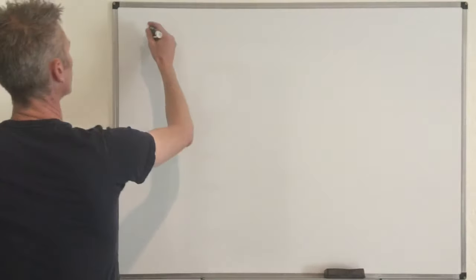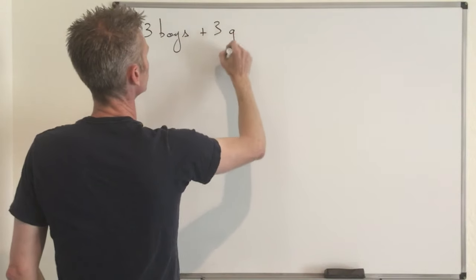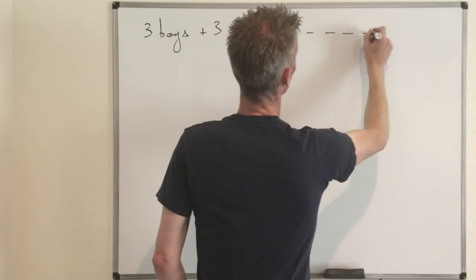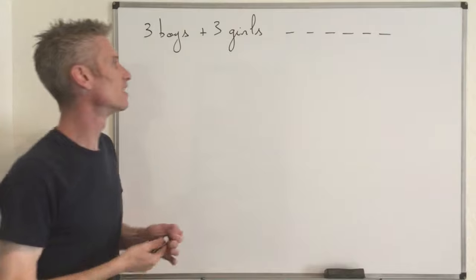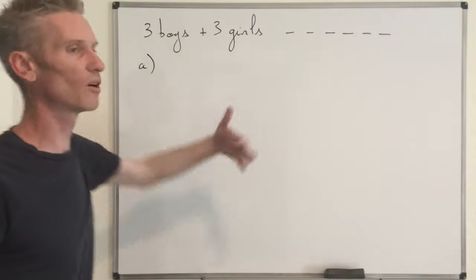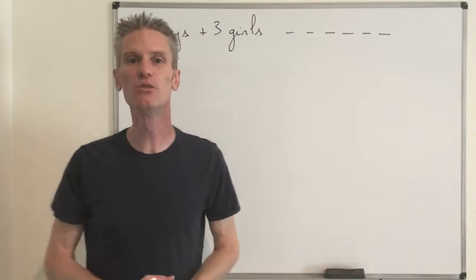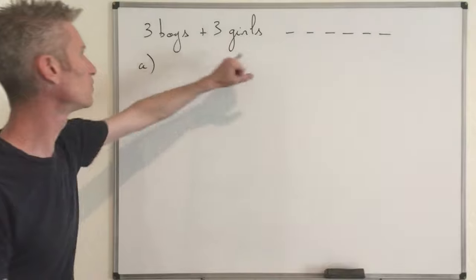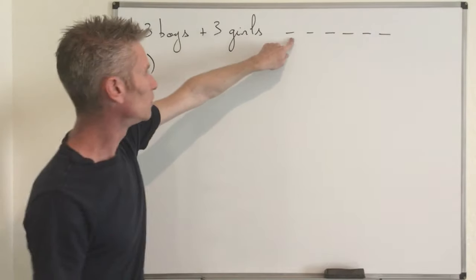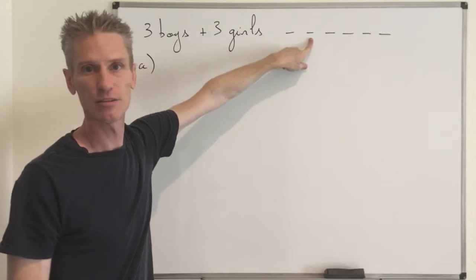So here we have three boys and three girls, and they must sit in a row of size six — you have six chairs. In the first question you have no restriction on the seating. Of course, we assume that boys and girls are distinguishable: you have three different boys and three different girls. We are not dealing with identical blocks; we are dealing with individuals, so those individuals are distinguishable.